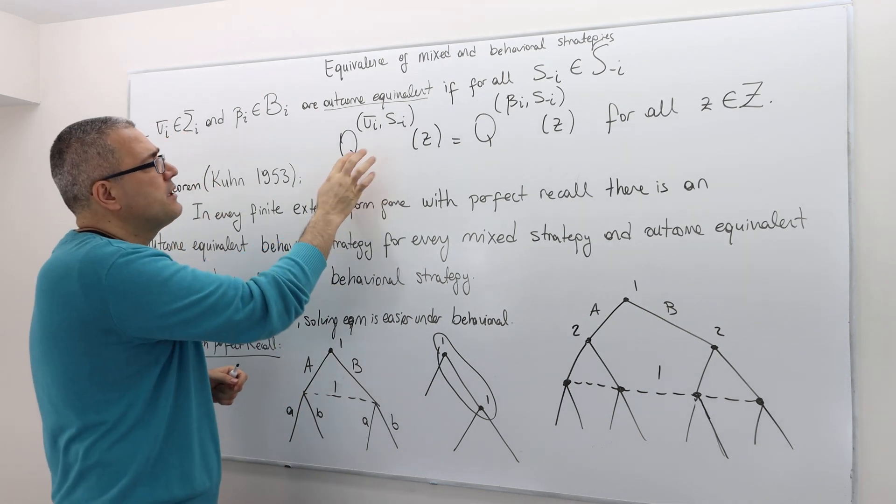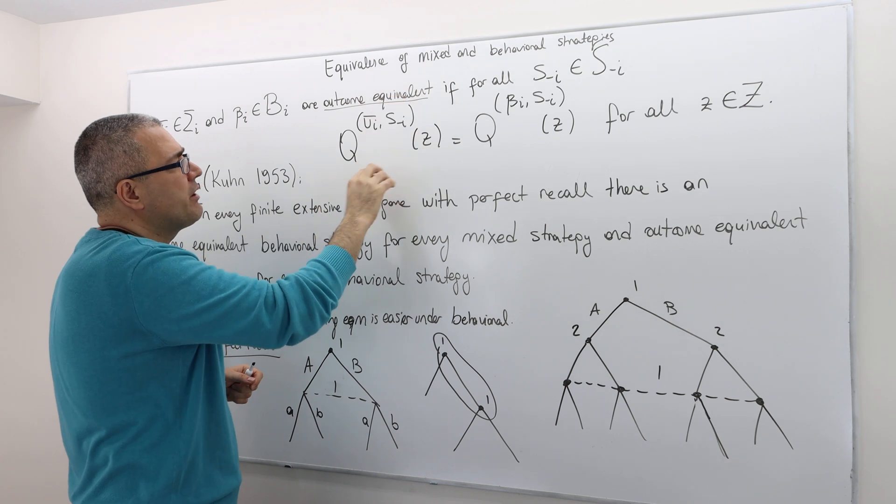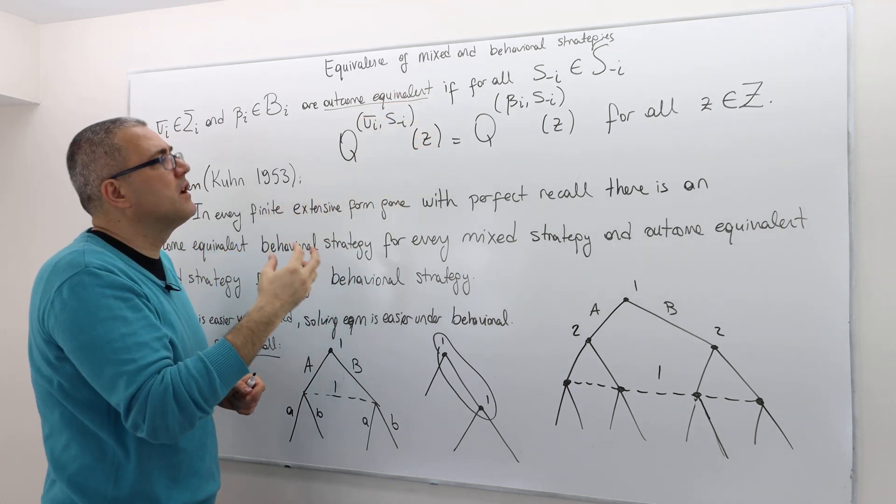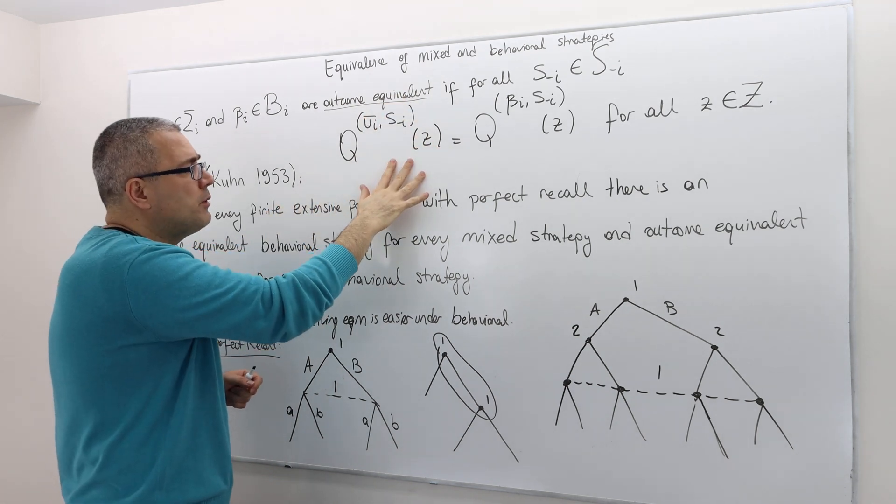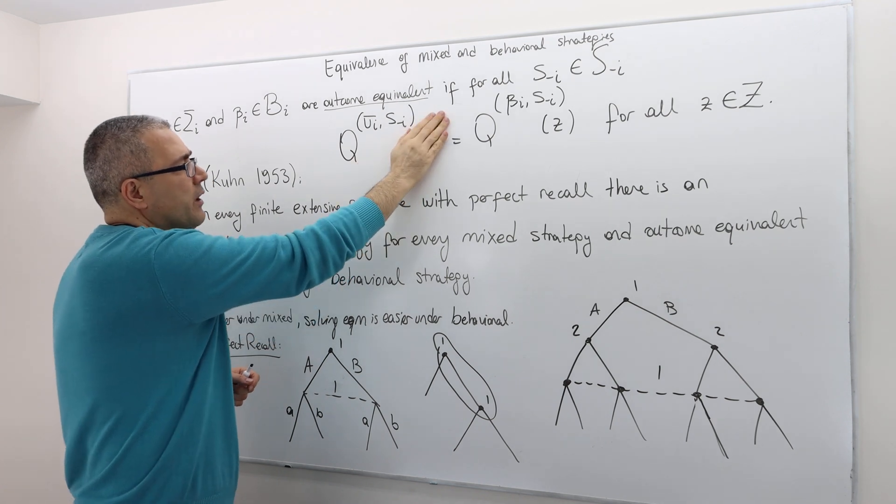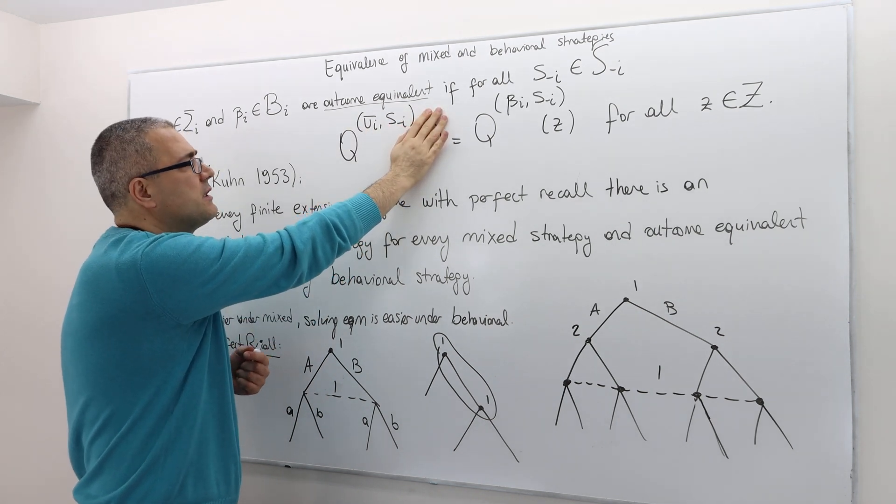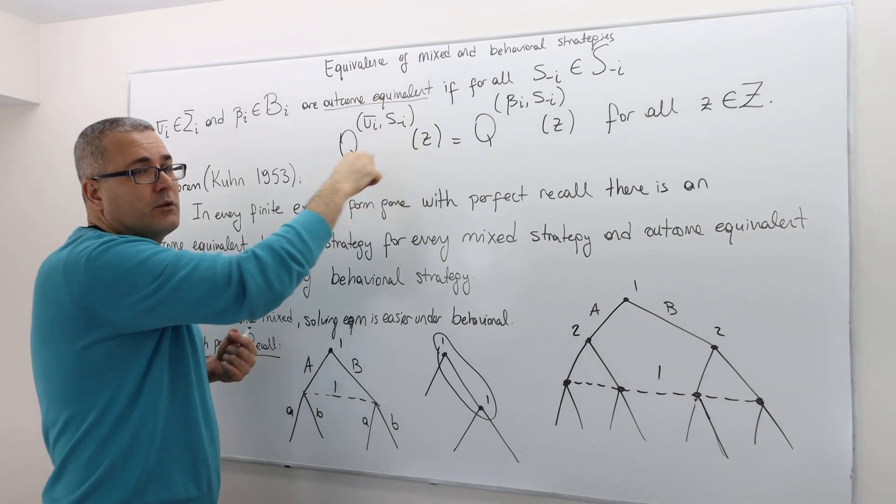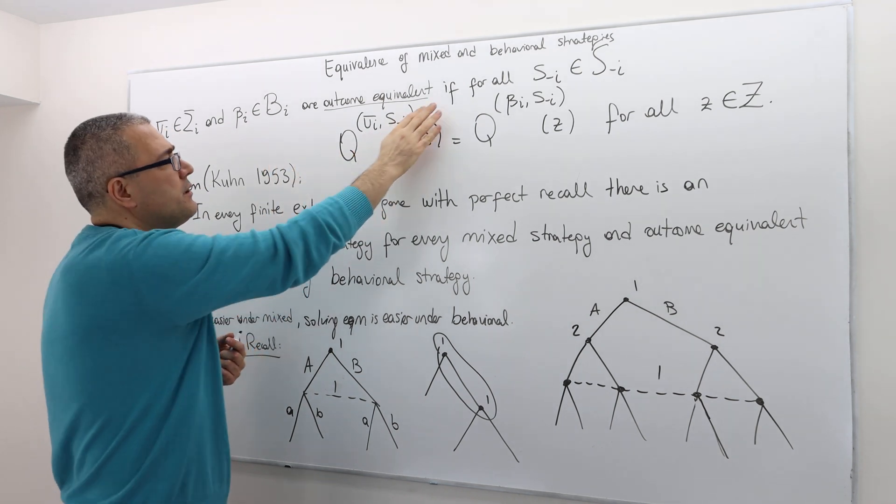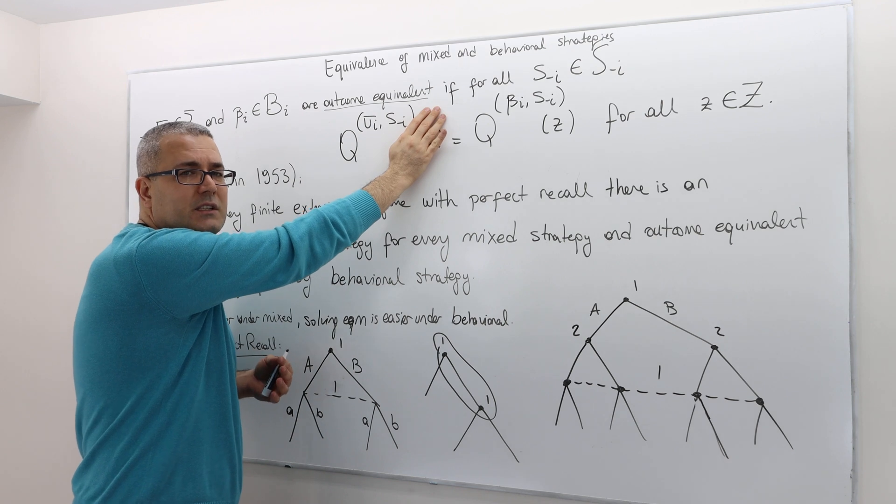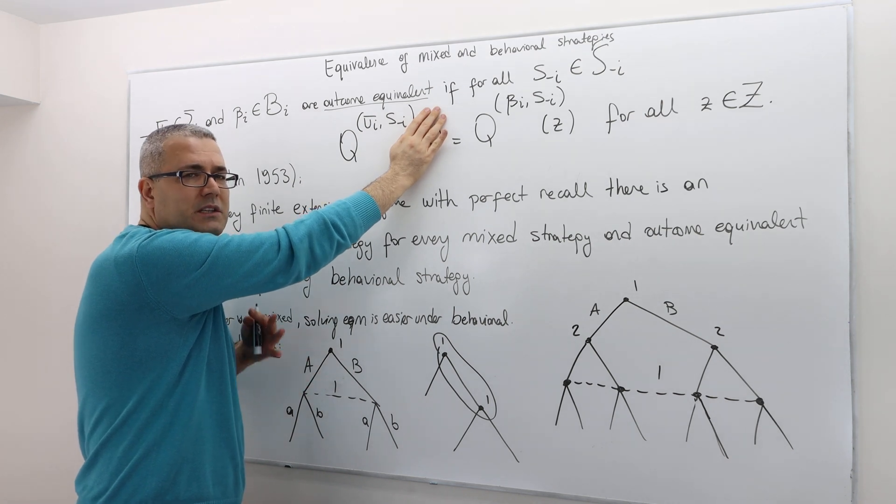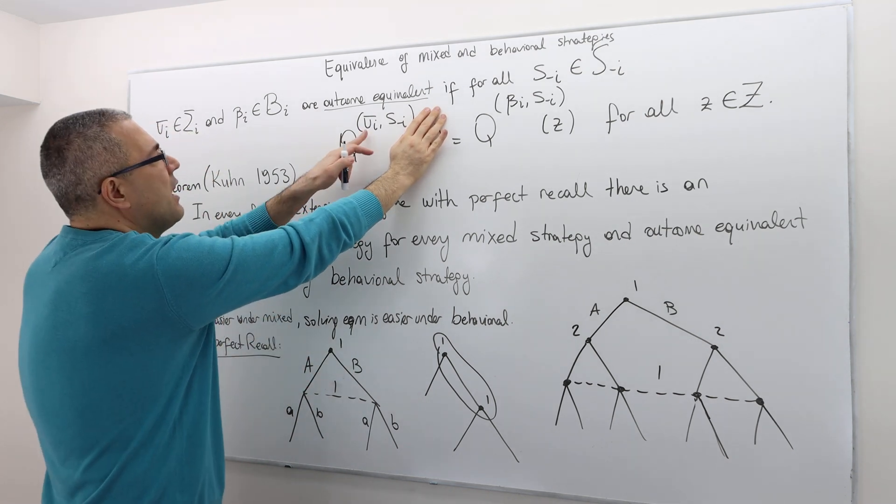We call these two strategies outcome equivalent if whatever pure strategy the opponents play, the outcome distribution of these two strategies must be the same. Remember this Q superscript Z is the probability distribution over the terminal histories. The probability distribution over the terminal histories obviously depends on the players, not only player I, but all the players' strategies.